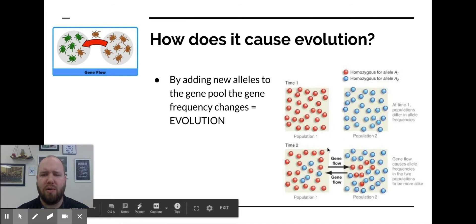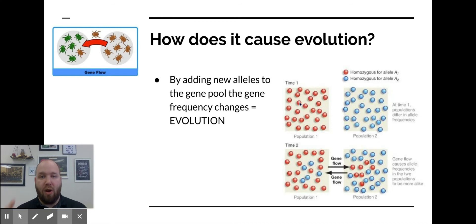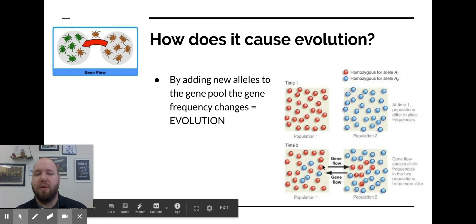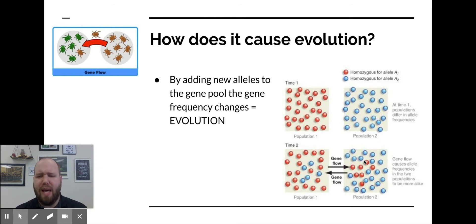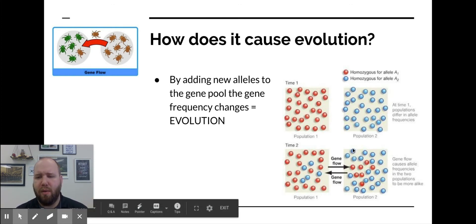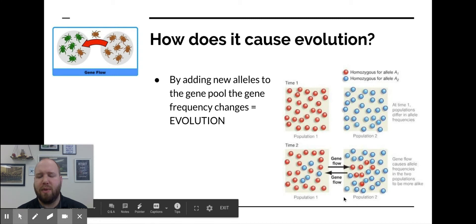This picture shows it really nicely. You have this population where you haven't had any evolution — all the alleles producing red are here, and all the alleles producing blue are here. But if some of the blue individuals come over to the red area, and some of the red individuals go over to the blue area, you can see how that changes what genes are available inside this population. At that point, evolution has already happened because the frequency changes.